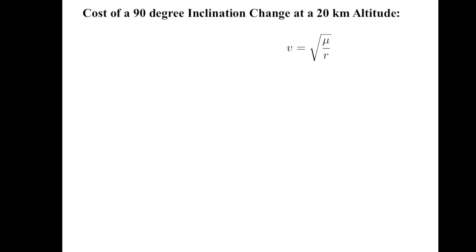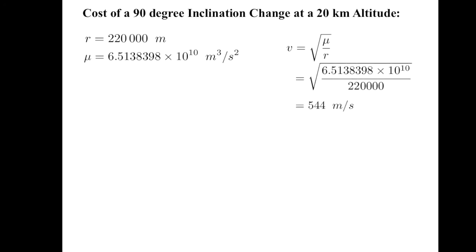R is the orbital radius from the center of the moon. As the moon has a radius of 200 kilometers, r is 220,000 meters. While mu is the standard gravitational parameter for the moon. Substituting in gets an orbital velocity of 544 meters per second. We now substitute that, along with the 90 degrees, into our trajectory change formula to get a delta v cost of 769 meters per second.